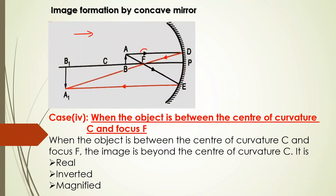This is your object. We have taken the first ray which is parallel to the principal axis — as we have learned, it passes through the focus after reflection. This is your first reflected ray. Then the second ray is passing through focus, and after reflection it goes parallel to the principal axis. I get an intersection point which is beyond C. The image is forming beyond C.